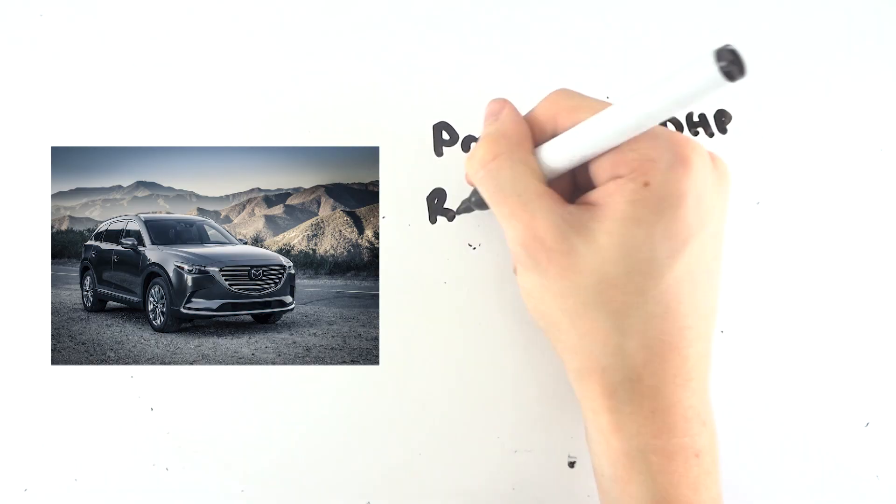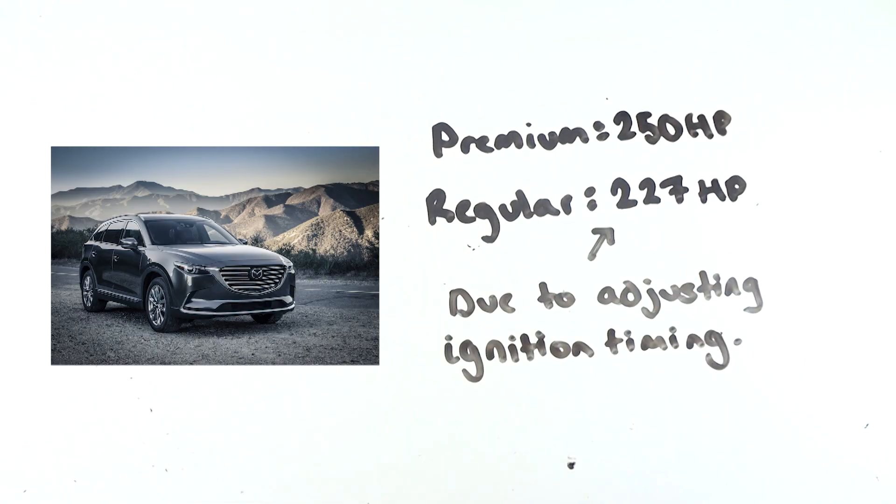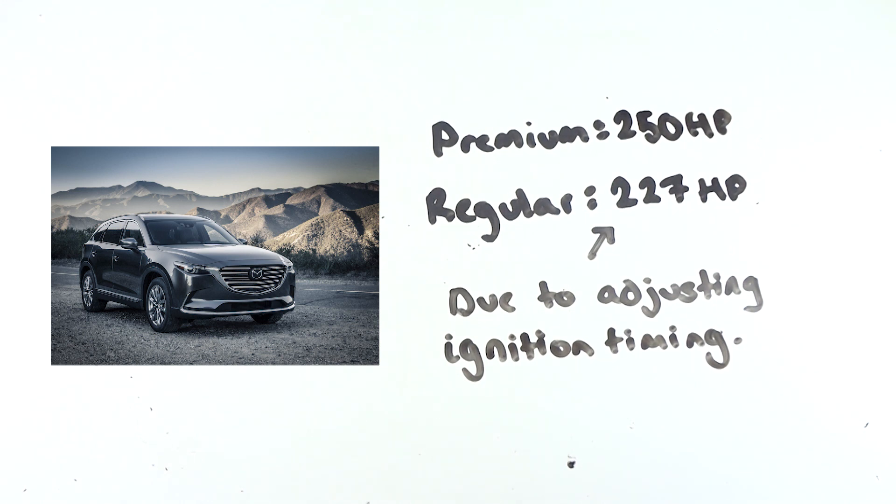In fact, the 2017 Mazda CX-9, which recommends premium fuel, outputs 250hp when using premium, compared to 227 when using regular, with a reduction in timing being due to the engine's electronic systems adjusting the ignition timing to avoid potential engine knock.